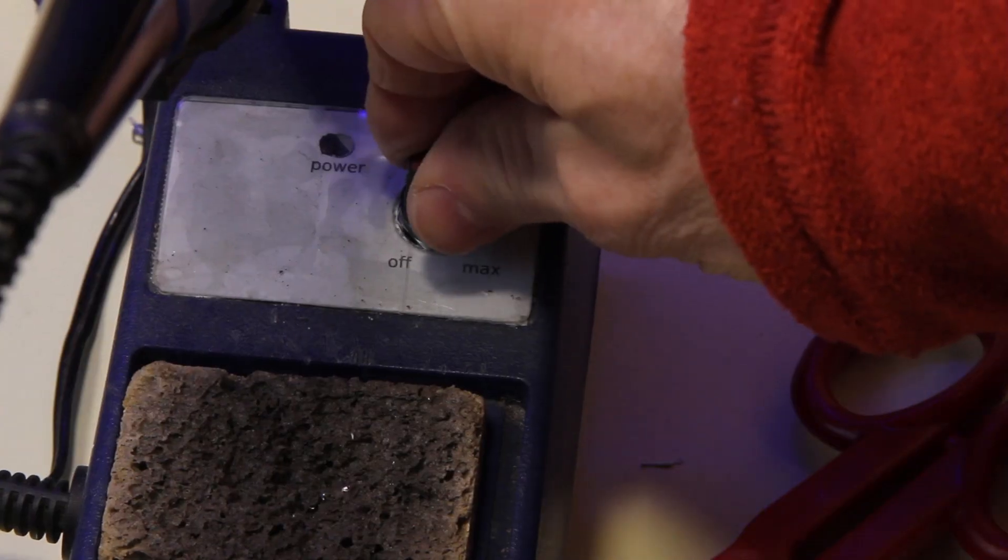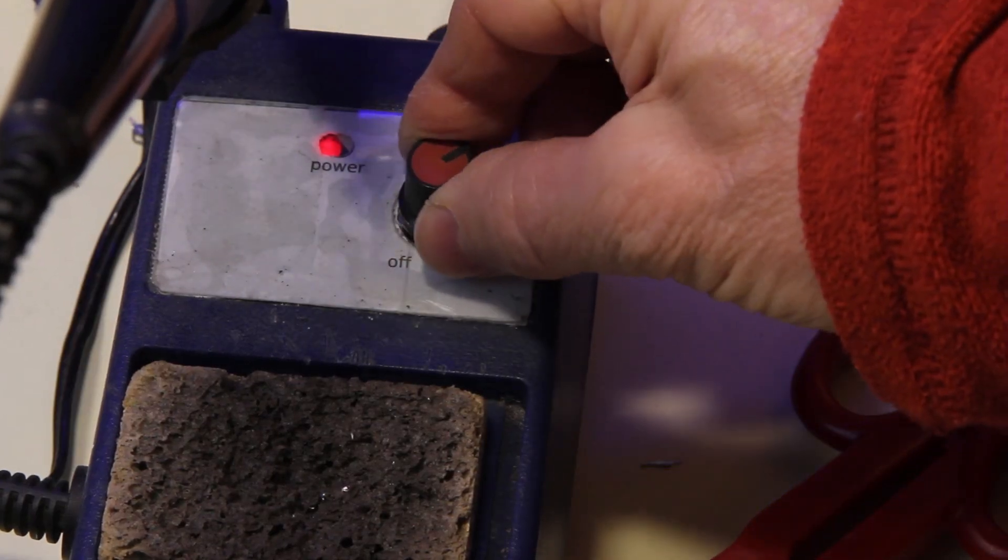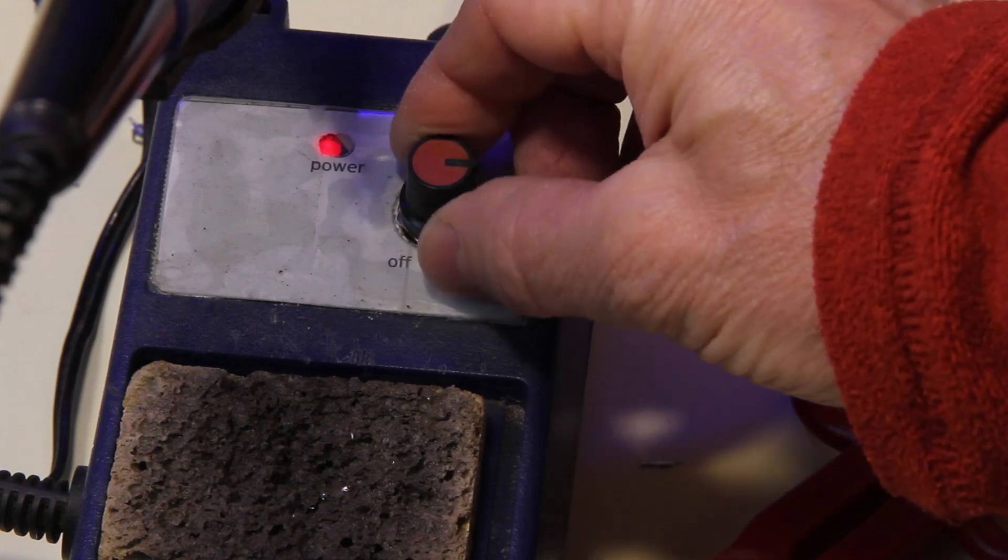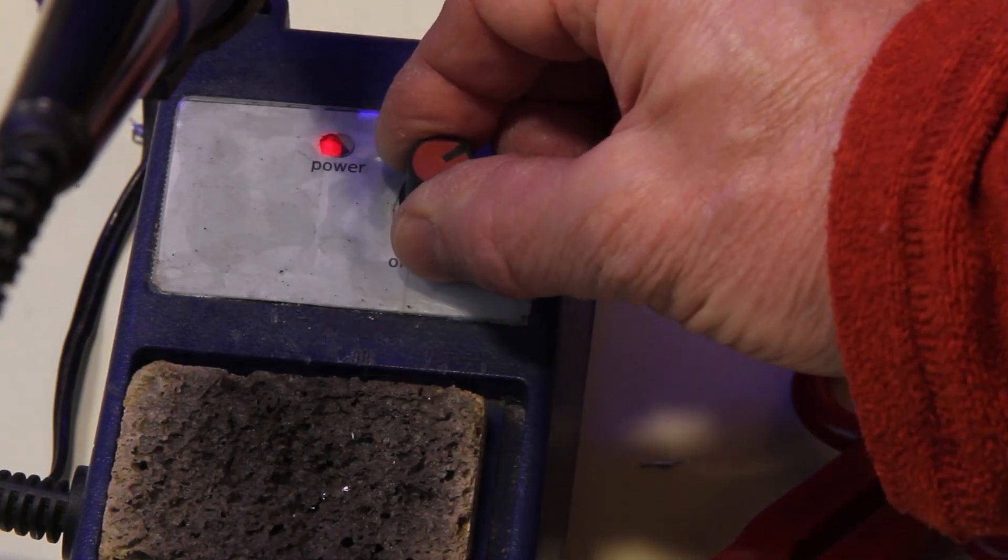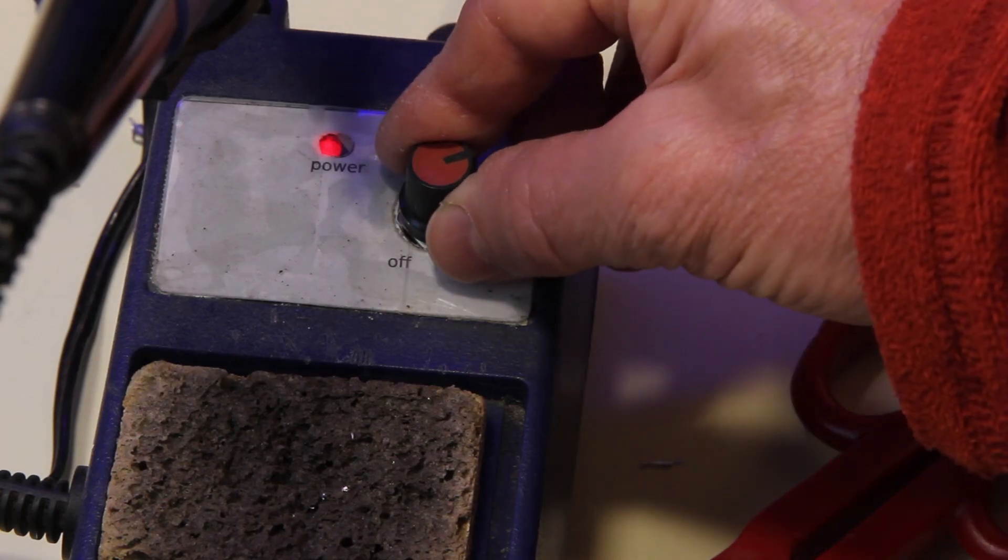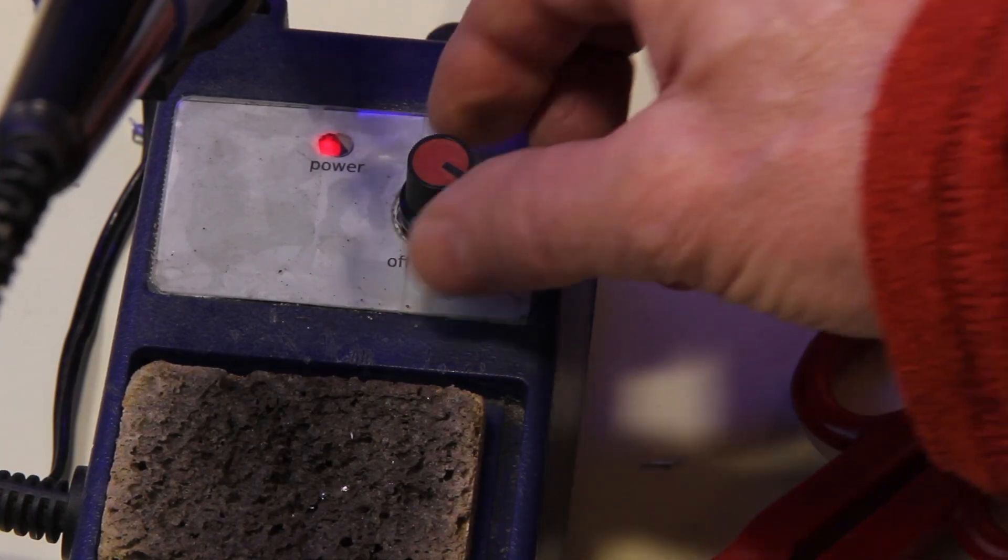Okay, so far we've seen the tools, now it's time to see how to solder avoiding mistakes. First step: adjust the power for the job you have to do. Smaller parts adjust for a little bit less power, larger parts adjust for maximum power.